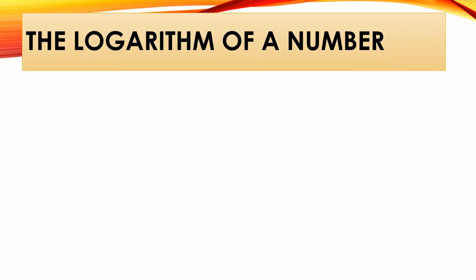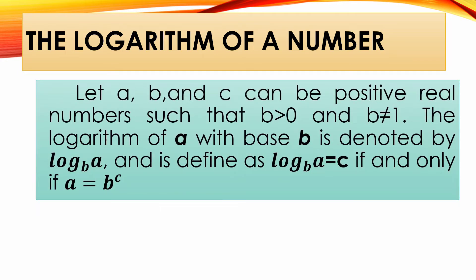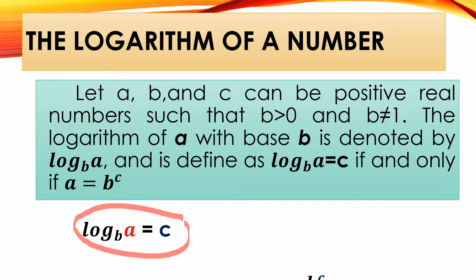The logarithm of a number: let a, b, and c be positive real numbers such that b is greater than 0 and b is not equal to 1. The logarithm of a with base b is denoted as log base b of a, and is defined as: the logarithm of a with base b is equal to c if and only if a is equal to b raised to c. This is the logarithmic form, while this is the exponential form — transforming from logarithmic to exponential form.